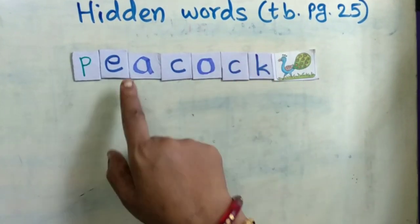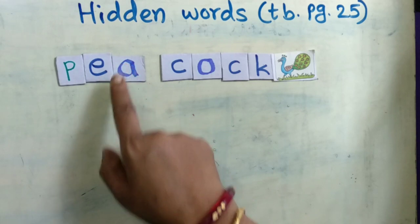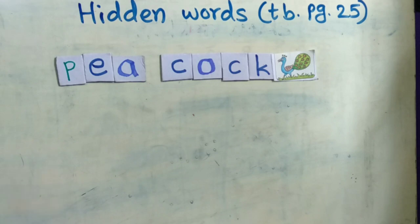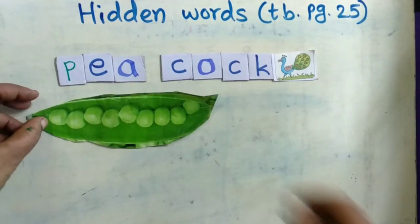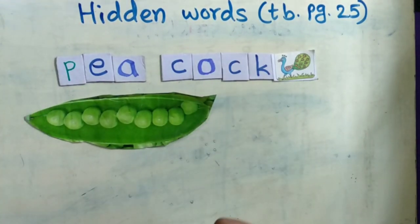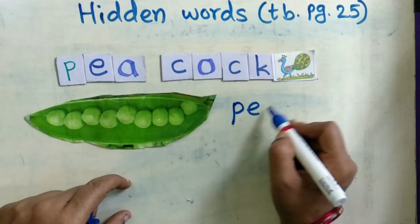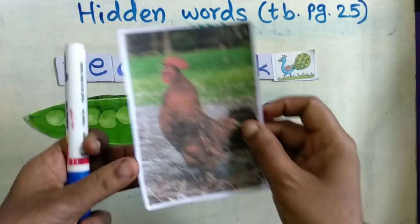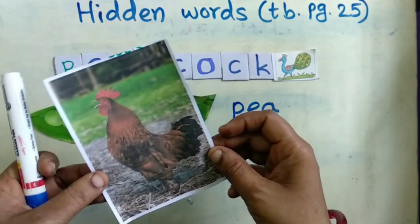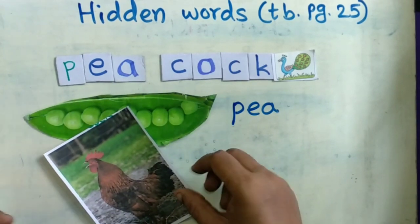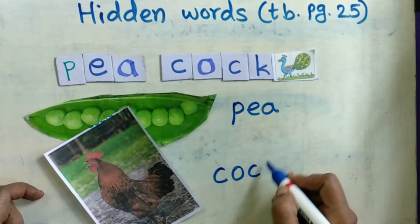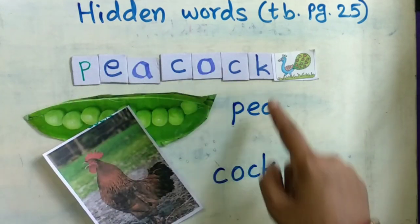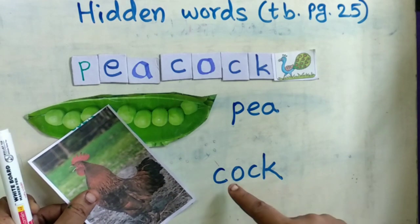Which are those? See, if I split this word here, I got one word P-E-A, pea. Pea is the name of a vegetable. Now another word: C-O-C-K, cock. Cock says cock-a-doodle-doo. So in the word Peacock, I got two words: P-E-A, pea, and C-O-C-K, cock.